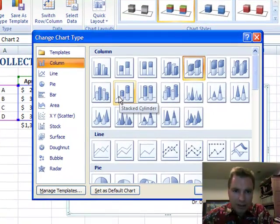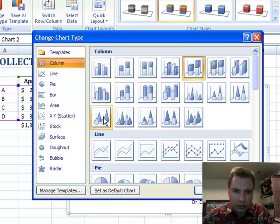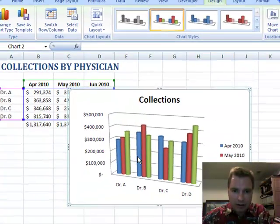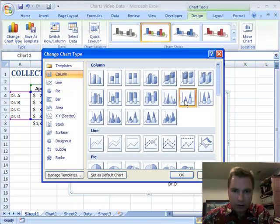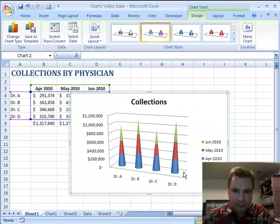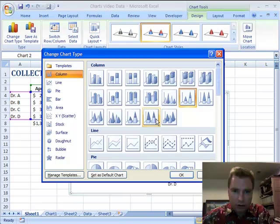Most of the rest of these down here are simply, we're going to do cylinders or cones or pyramids as opposed to these bars here. I'll show you what one of them looks like. There is a 3D version of the cylinder or you could do something like this and then that's 3D with cones or you could do it with pyramids.